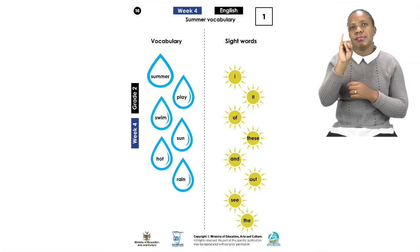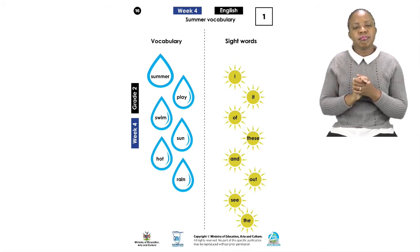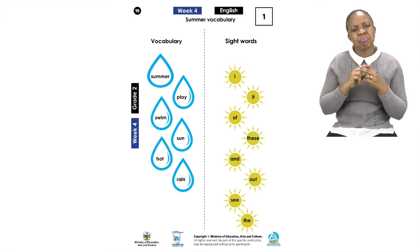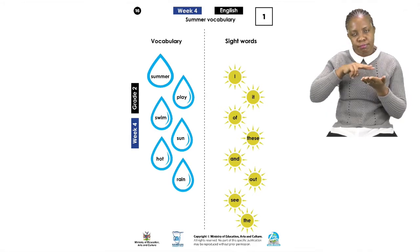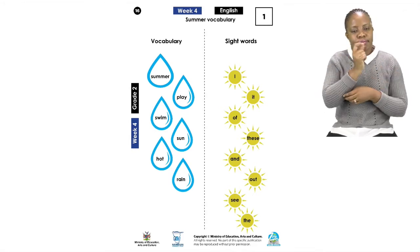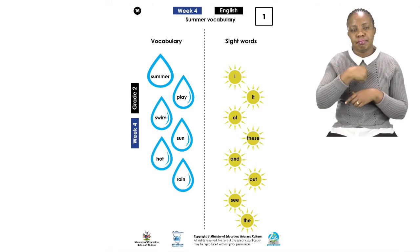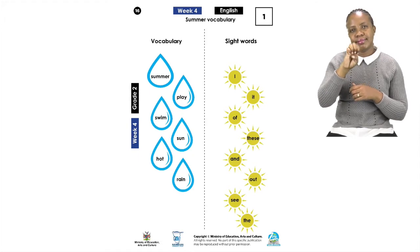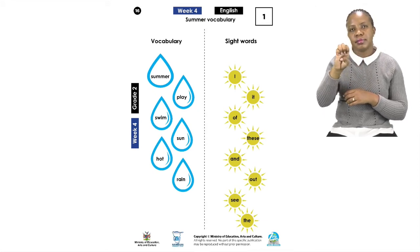Remember, sight words are words that we use often when we are speaking, reading, or making sentences. Our sight words are — repeat after me: I, it, of, these, and, out, see, and the.